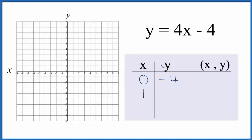So how about 1? 4 times 1 that's 4. 4 minus 4 that gives us 0 for y.